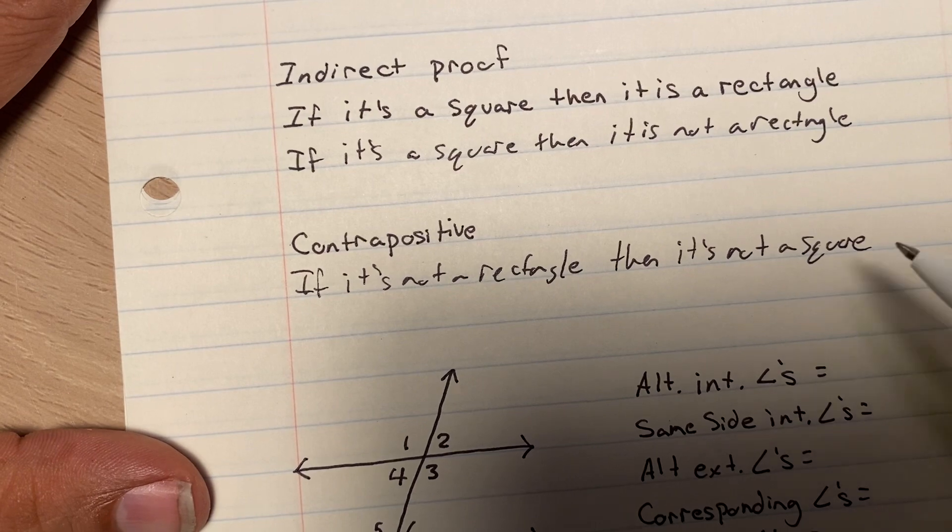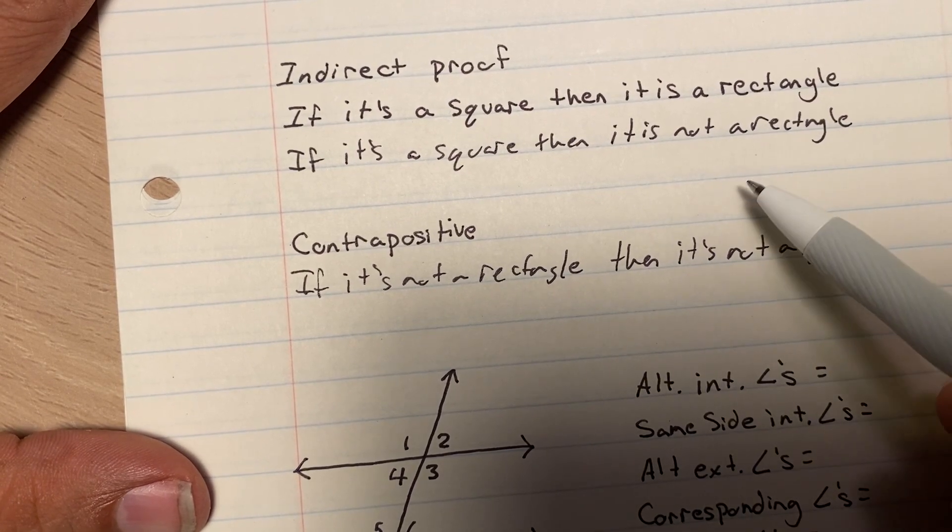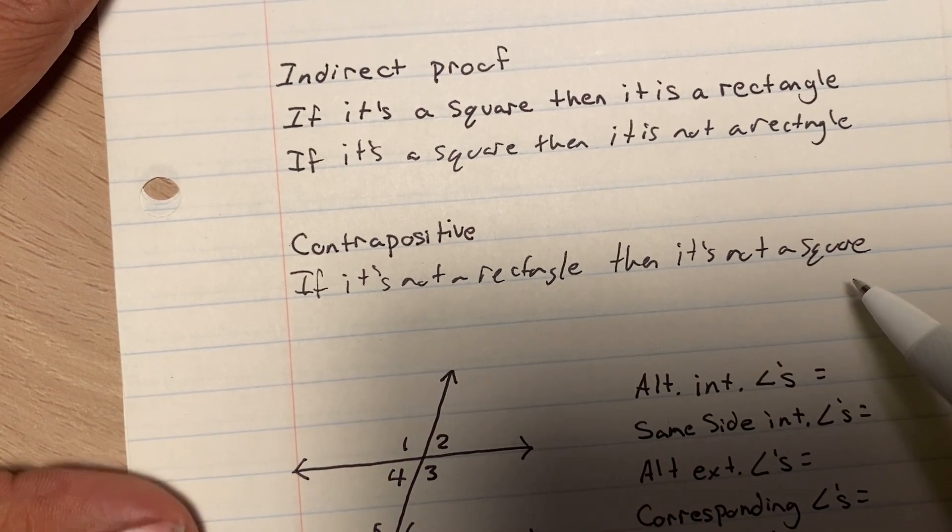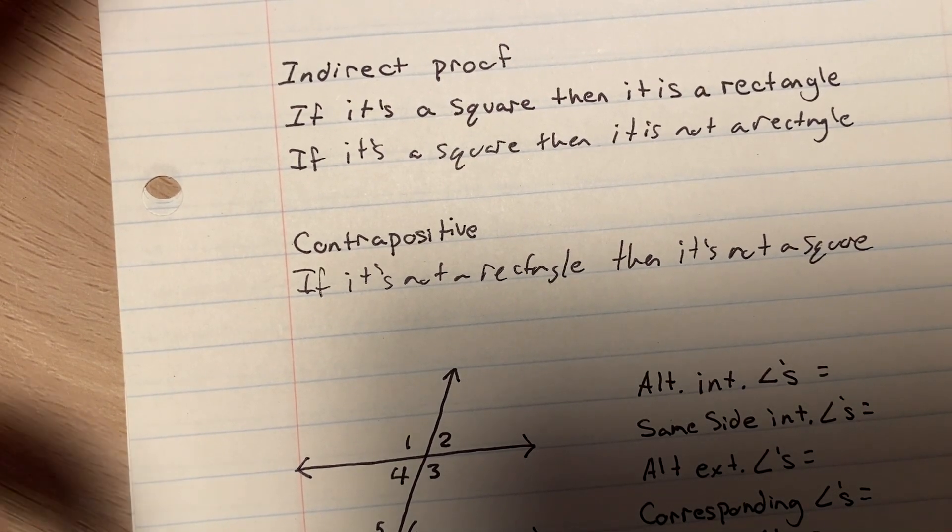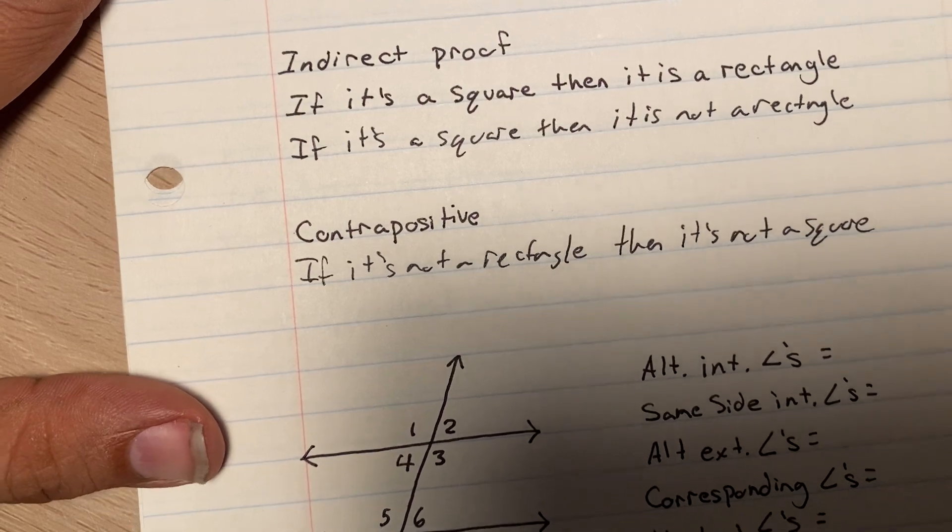That's the contrapositive of the original statement. Now, if I can prove this statement, then I will be proving the original statement as well, because in the truth value, they are equal.